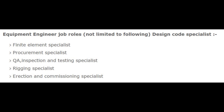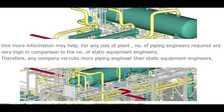And now, equipment engineer job roles, not limited to the following: Design Code Specialist, Finite Element Specialist, Procurement Specialist, QA Inspection and Testing Specialist, Rigging Specialist, Erection and Commissioning Specialist. For any size of plant, the number of piping engineers required is very high in comparison to the number of static equipment engineers. Therefore, any company recruits more piping engineers than static equipment engineers.